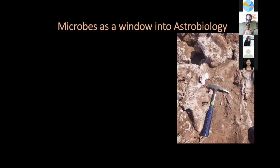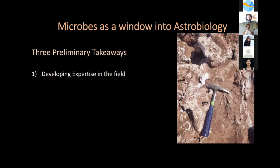Following the microbe gave me a window into astrobiological practice. The first of three preliminary analyses is the relationship between the doing of astrobiology and what that does for developing expertise in the field. This expertise I found was embodied — a result of repetition and practice that made things like finding a sensor in the middle of the desert or effectively using a knife to scrape out material almost intuitive. This is a knowledge that goes beyond a textbook, enabling scientists to recognize patterns or inconsistencies applicable both in the field and back in the lab.